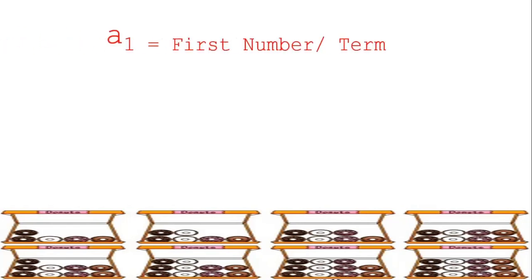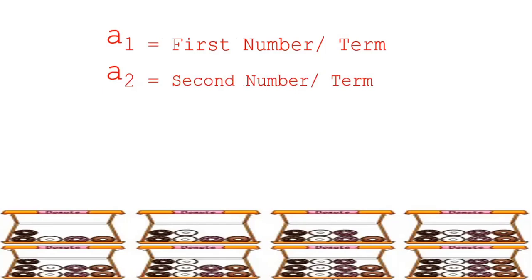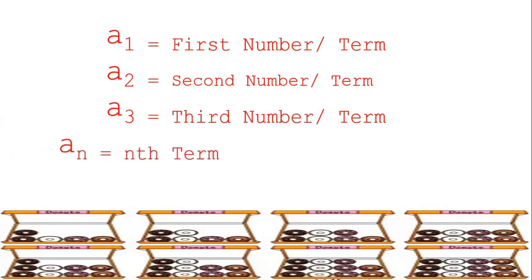But what do these terms represent? a sub 1 represents the first number or the first term. a sub 2 represents the second term. a sub 3 represents the third term. a sub n represents the nth term or the general term.